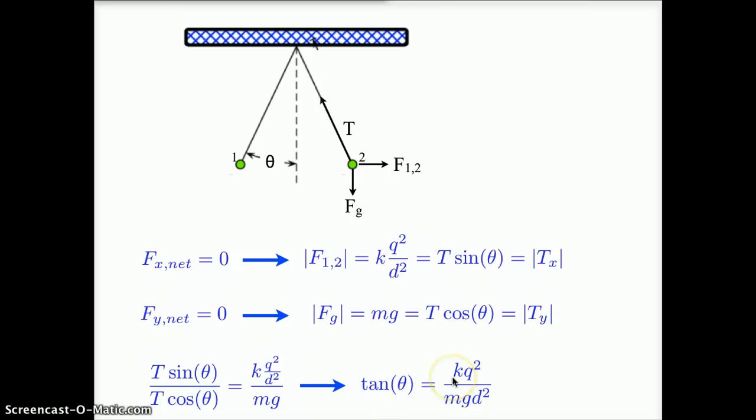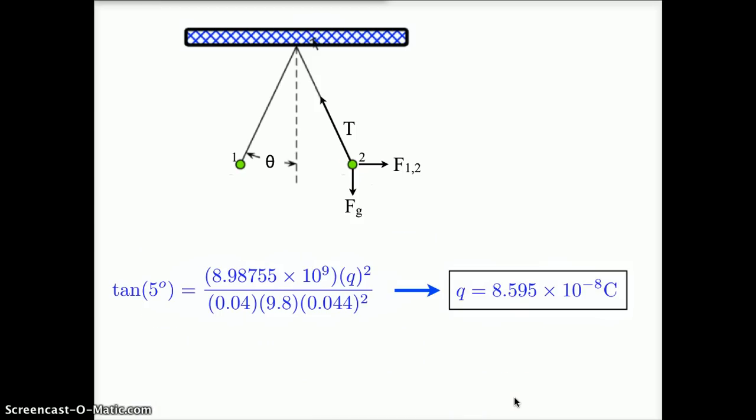We know theta. We know k. That's a constant that we can look up. We know m. We know g. And we already solved for d. So if I plug in all of my numbers, I end up figuring out that q is equal to 8.595 times 10 to the minus 8 Coulombs. This is the magnitude of the charge. All we know is that charge 1 and charge 2 are identical. They might be positive charges. They might be negative charges. But the magnitude of the charge is 8.595 times 10 to the minus 8 Coulombs.